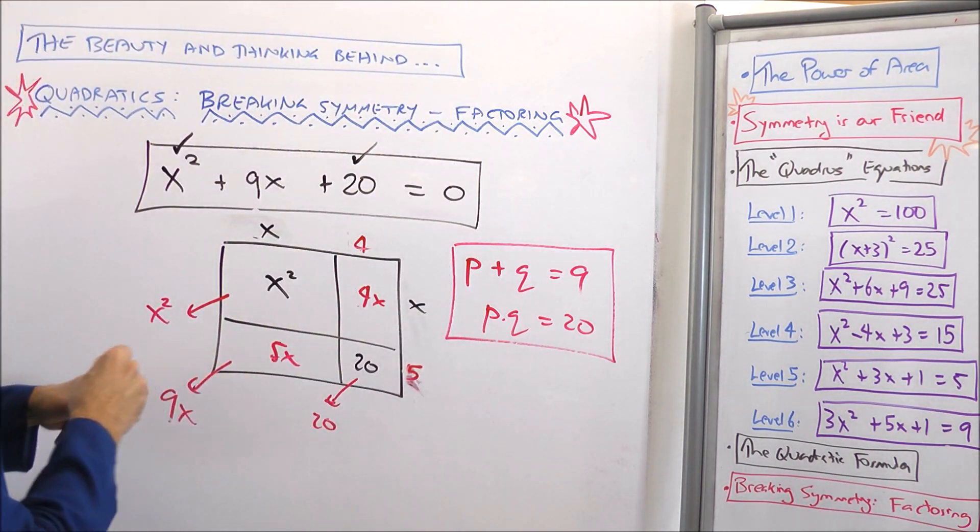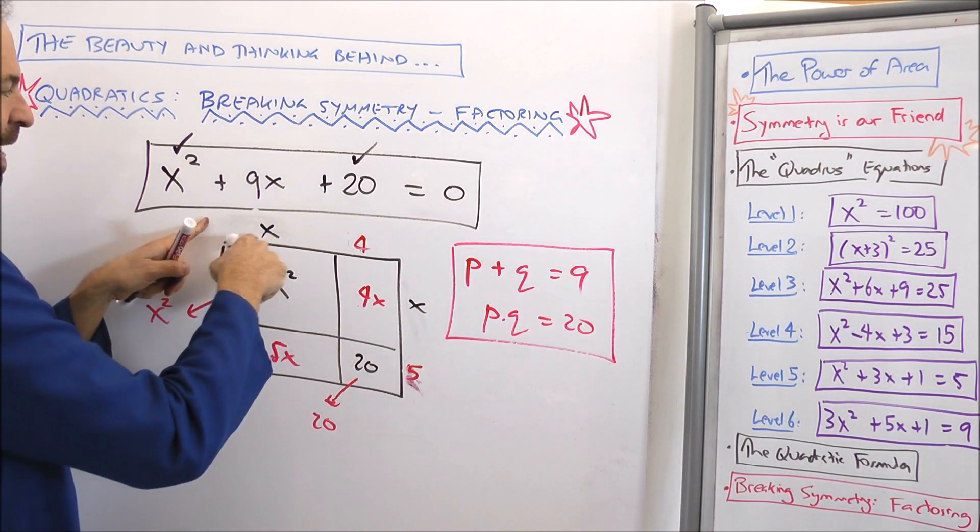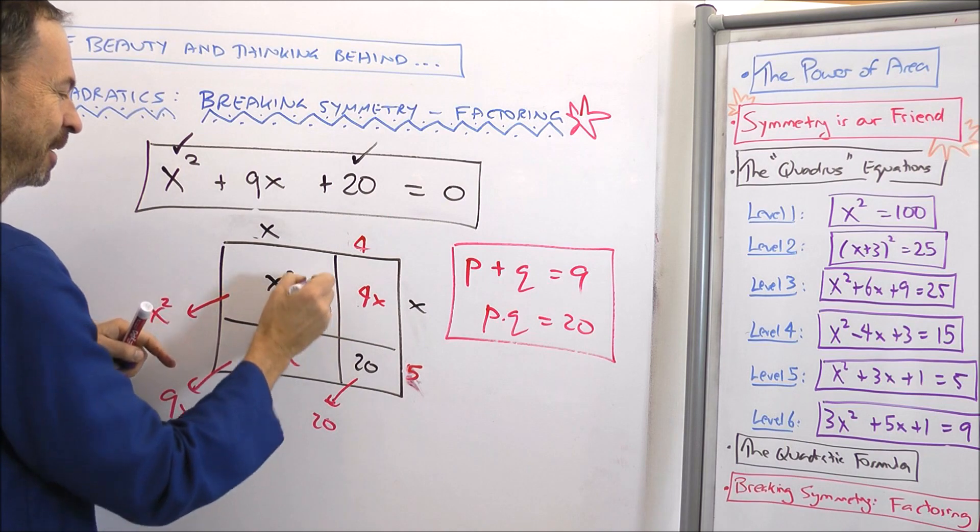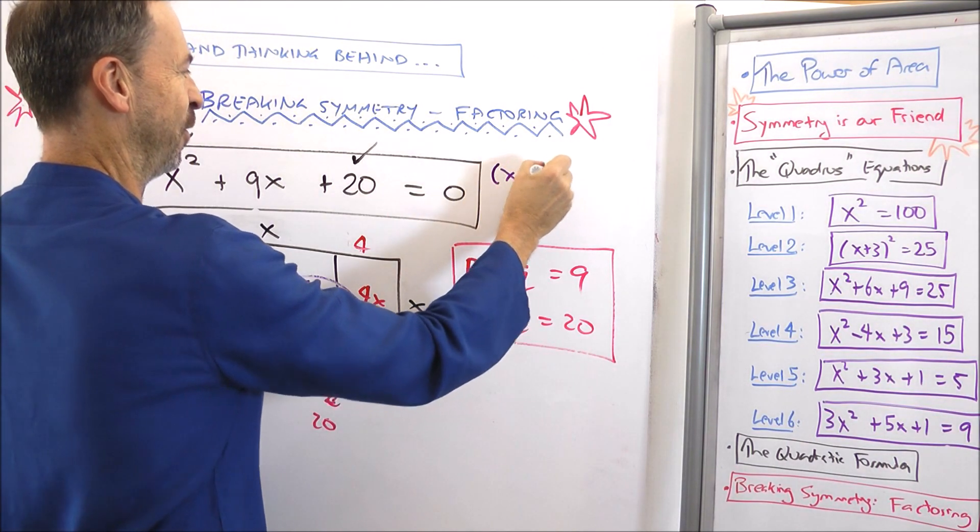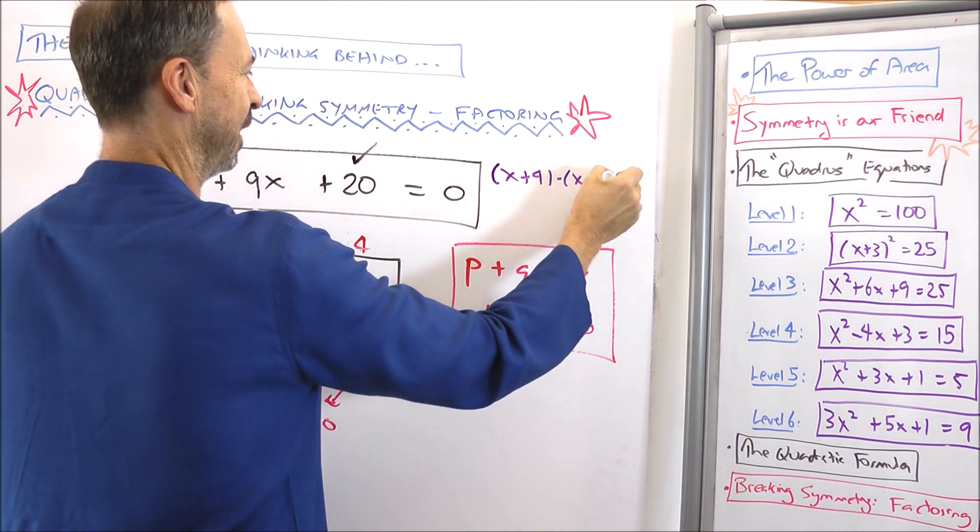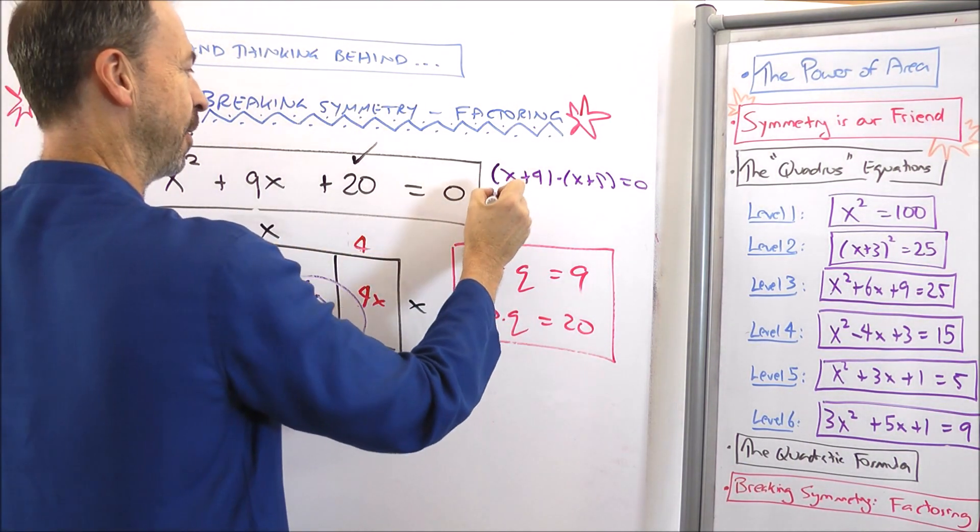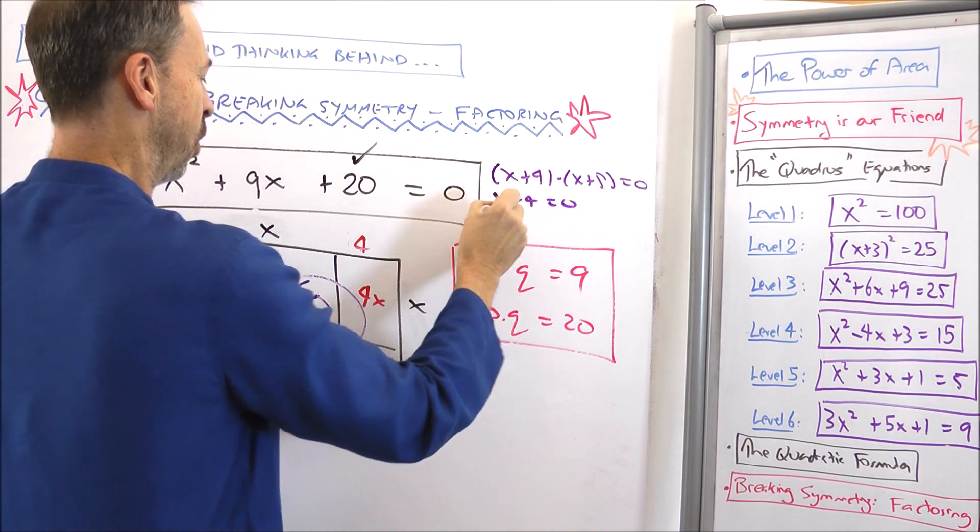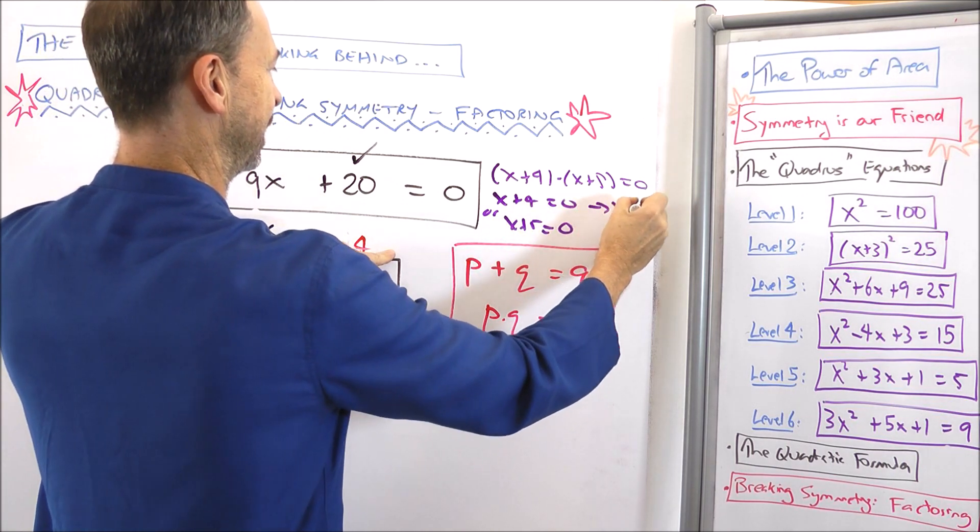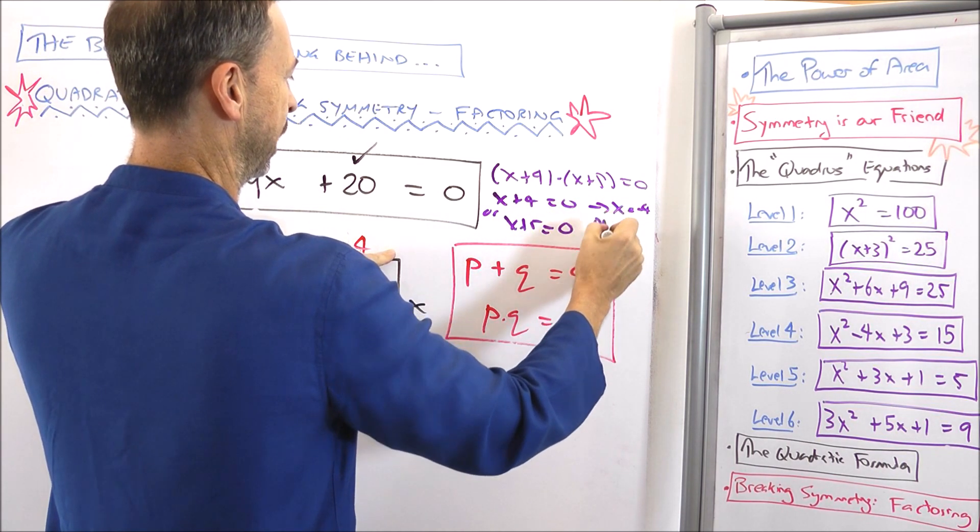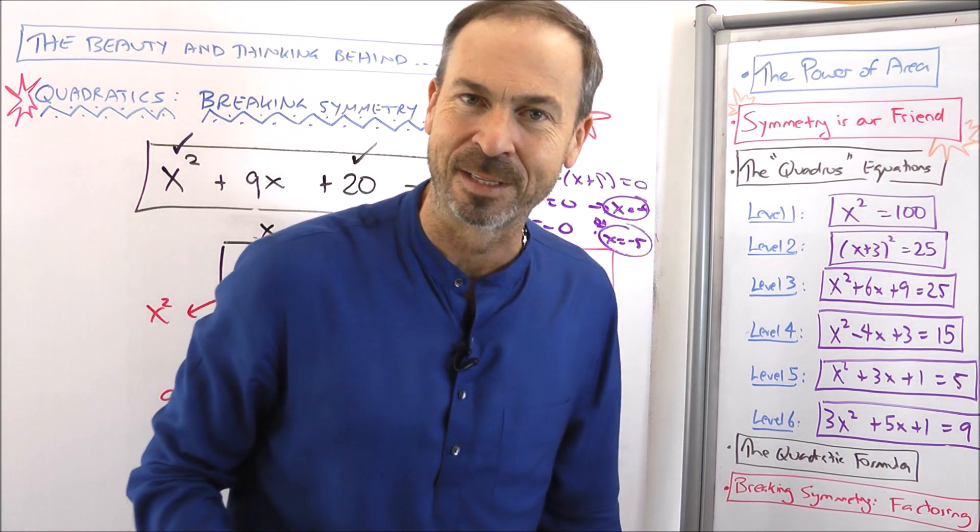So that tells me this quadratic I can see as a rectangle. It's an x plus 4 by x plus 5 rectangle. And its area is 0. In which case, I know I'm really dealing with x plus 4 times x plus 5 is 0. So either this length is 0, so x plus 4 is 0, or this length here is 0, x plus 5 is 0. That implies x is negative 4 or x is negative 5.